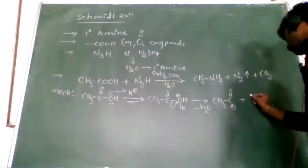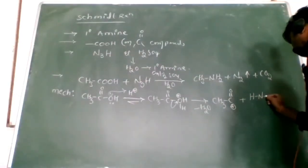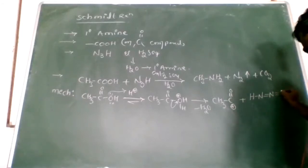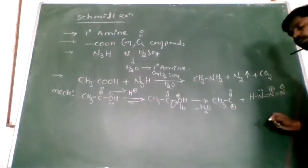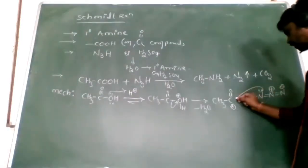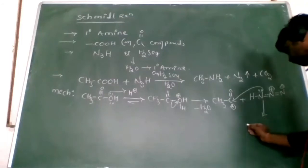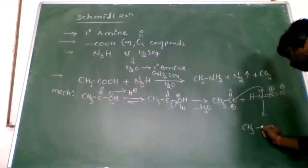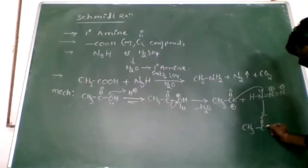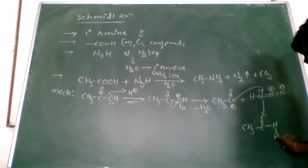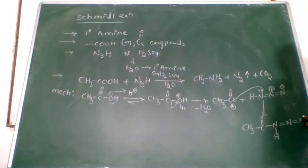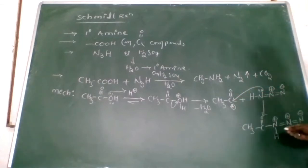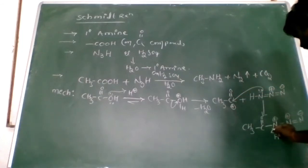CH₃CO⁺ reacts with hydrazoic acid HN₃, written as N⁻=N⁺=N⁻ with a lone pair on nitrogen. That nitrogen gives its electrons to the carbon. This forms CH₃CO bonded to N–H with N⁺=N⁻. The H⁺ is then removed from nitrogen.